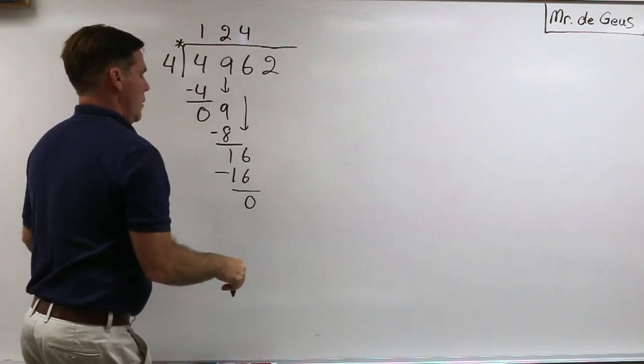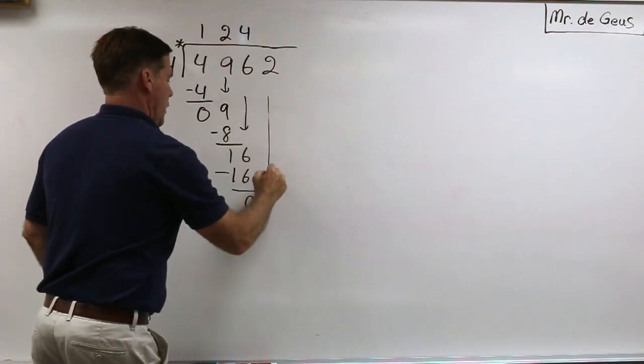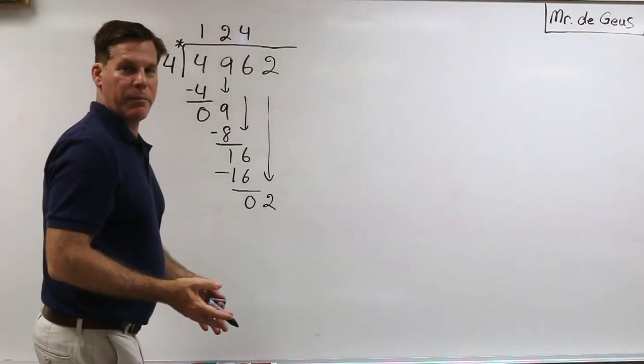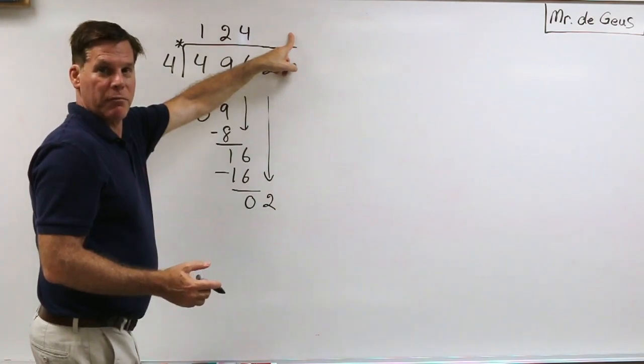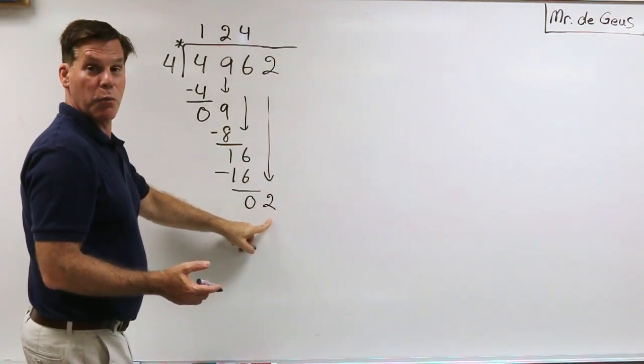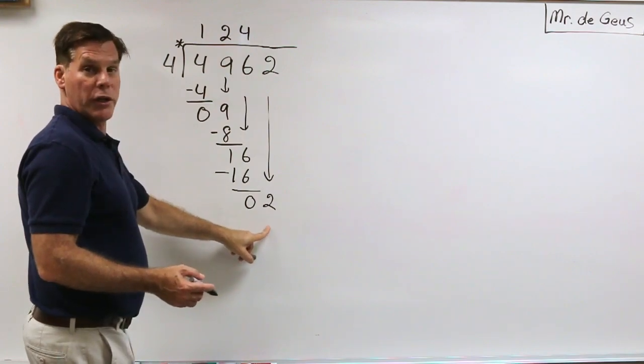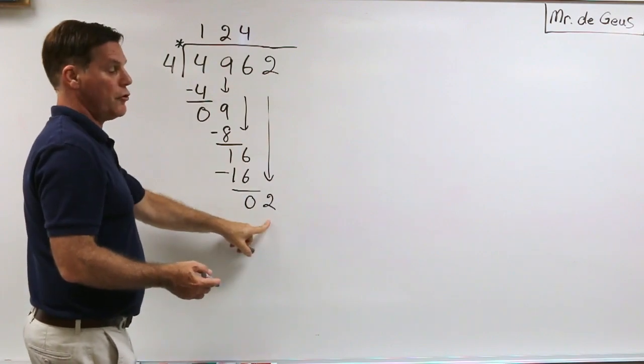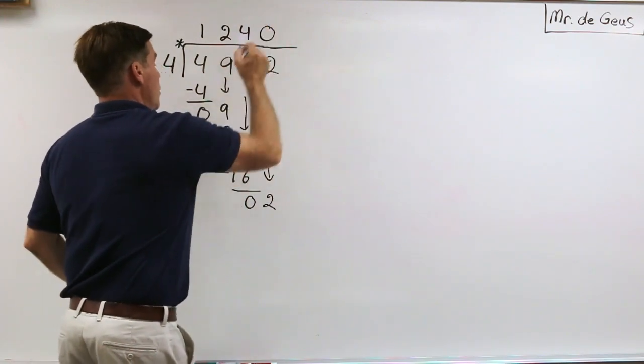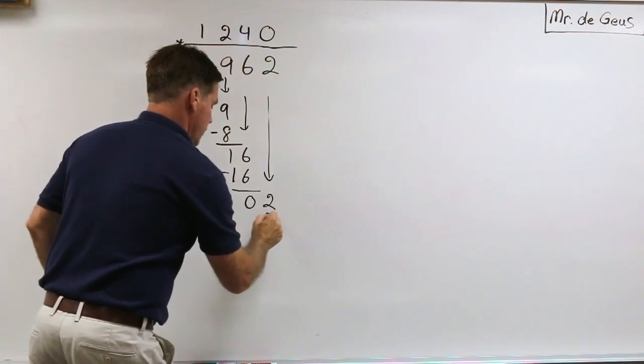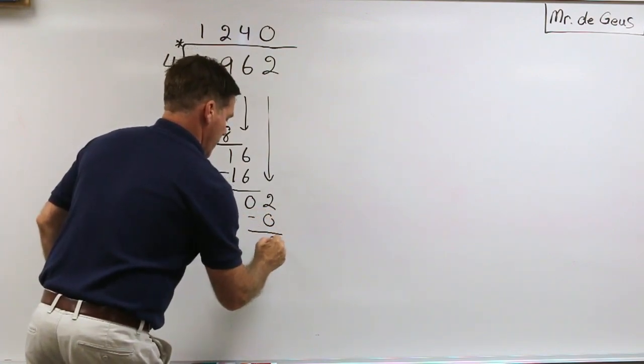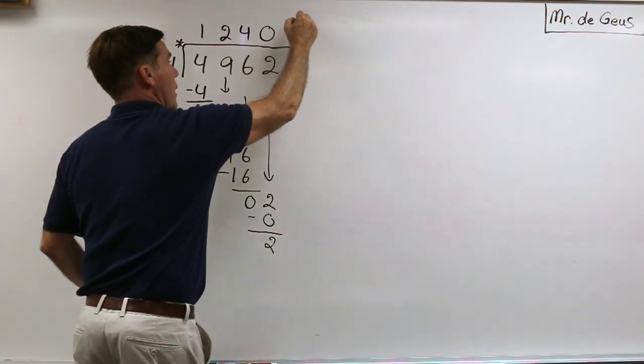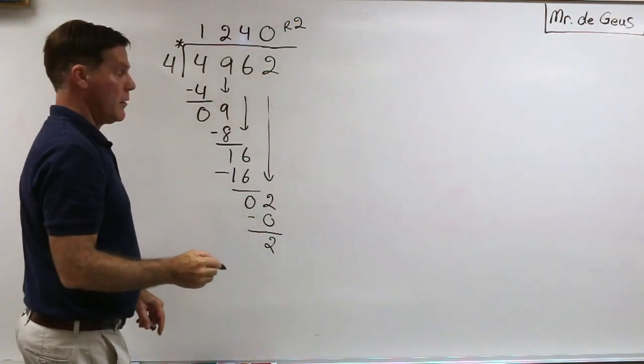I've got a zero and then I'm going to go ahead and bring down the 2. Now here's where students run into a problem. They just put a remainder of 2 up here. Sometimes that's not a remainder, we still have to keep working. So how many times does 4 go into 2? Well it doesn't go into 2, so we have to make sure 4 goes into 2 zero times. So 4 times 0 is 0.